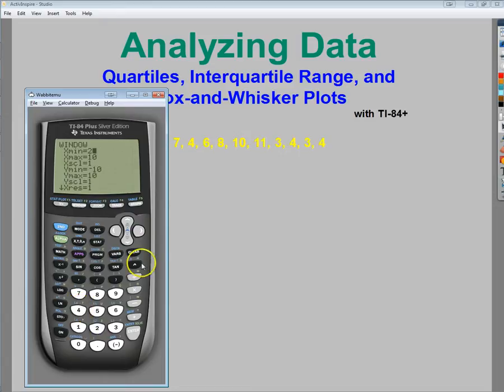I usually go like 1 below the smallest number, so 2, and my X maximum I'm going to put 1 above, so 12. And now that that's all kind of where it needs to be, I'm going to hit Graph, and it should make a nice box-and-whisker plot for me.